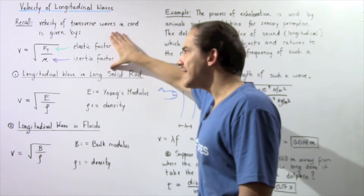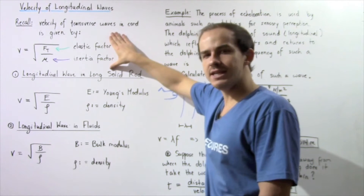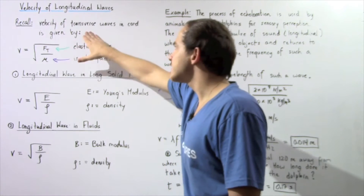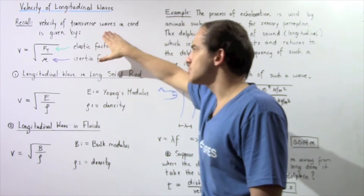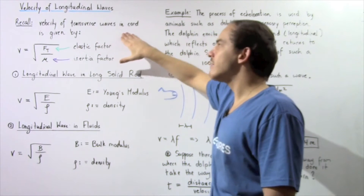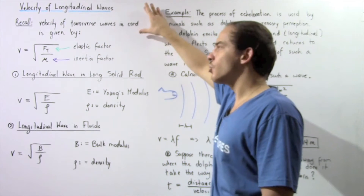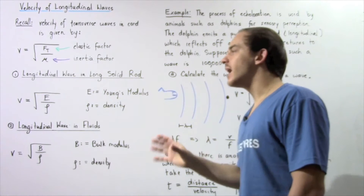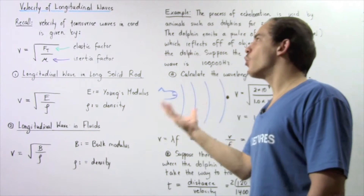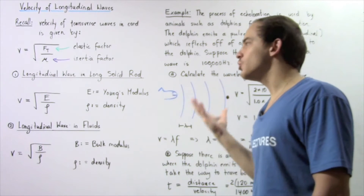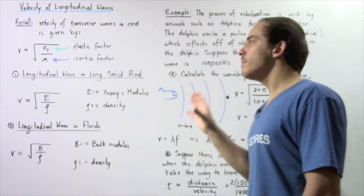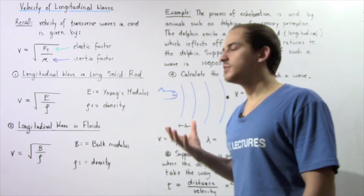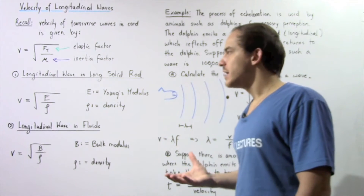From this equation we see that the velocity of transverse waves when they travel inside a chord only depends on the type of chord — that is, the type of medium — that we're using.